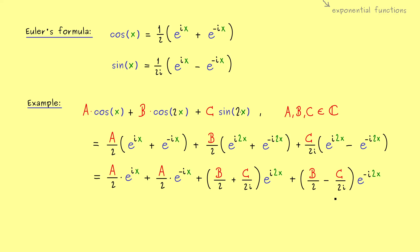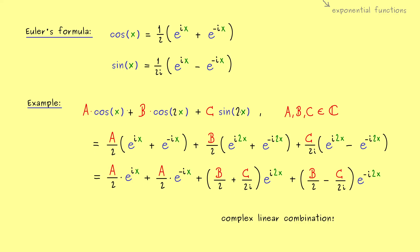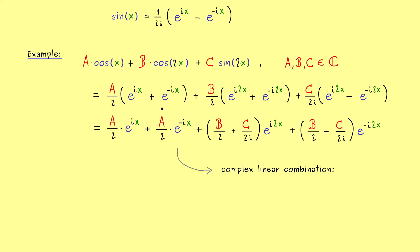We rewrite it as an ordinary linear combination for the exponential functions, putting the correct coefficients together. For example, we have b over 2 plus c over 2i as the coefficient for the function e to the power i·2x. And for the function with the minus in the exponent, we also find the coefficient with the minus sign. This is a linear combination of four exponential functions where the coefficients are given by complex numbers. What you should remember is that we have an equality — we can go from the left to the right hand side and the other way around. So for complex linear combinations, there is no difference between the trigonometric functions given by cosine and sine and the exponential functions.